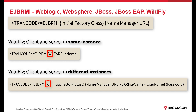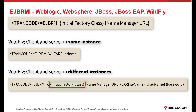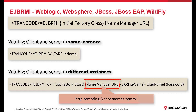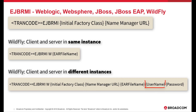Here, W stands for connecting to Wildfly. EAR file name is for the name of the server EAR file. Initial factory class is for org.jboss.naming.remote.client.initialContextFactory. Name manager URL is for HTTP-remoting colon double-slash hostname colon port. Username is the Wildfly username, and password is the Wildfly password.